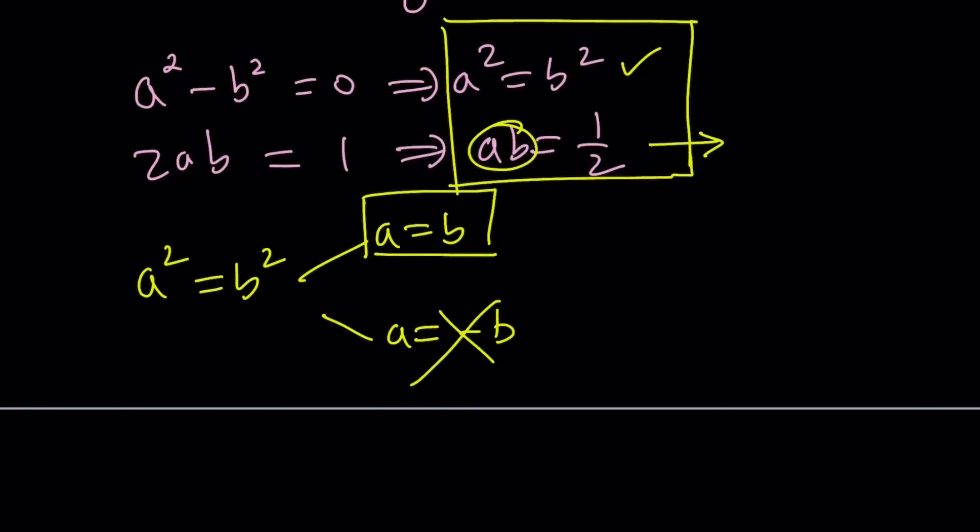And since their product is 1 half, think about the square root of 1 half. So a must be equal to b, and that equals the square root of 1 half, which can be written as 1 over square root of 2. But I would like to rationalize the denominator and write it as root 2 over 2.